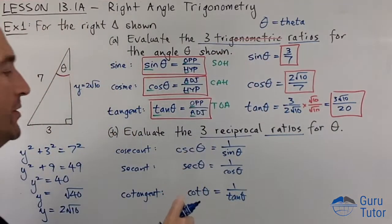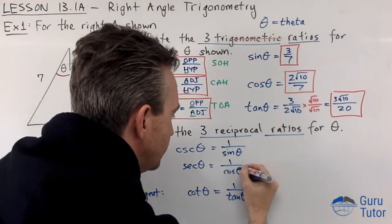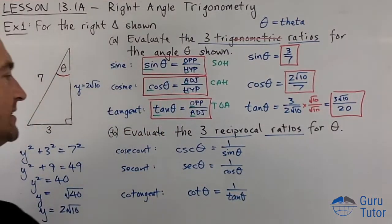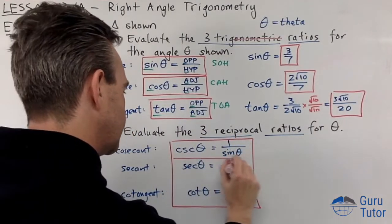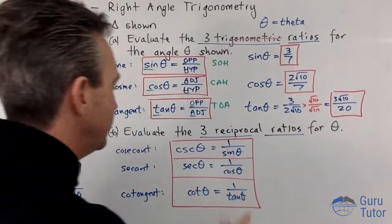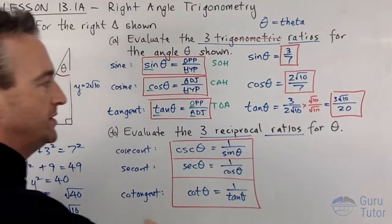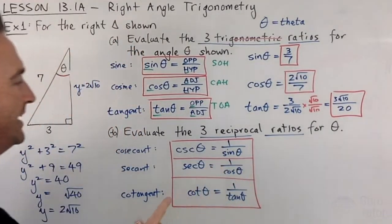For each of these three up here, there is a corresponding reciprocal ratio. You take that and you turn it upside down and you get these three new ones. So that is for your notes, that is what these three reciprocal ratios are. Let's actually evaluate them for theta.